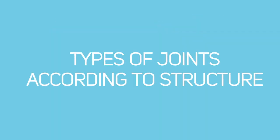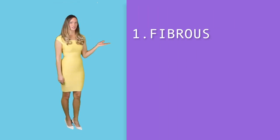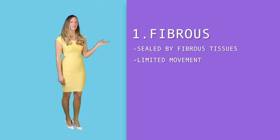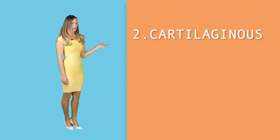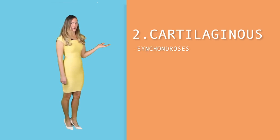Types of joints according to structure. There are three types of joints according to structure, or the kind of tissue that holds them together. First, fibrous joints — these joints have surfaces sealed by fibrous tissues. Given that they are fibrous, the connective tissues are hard, and movements allowed for the bones become very limited, making the bones close to immovable. Second, cartilaginous joints connect via the softer cartilaginous tissue. Some cartilaginous joints, called synchondrosis, turn into full-fledged bone when adulthood comes.